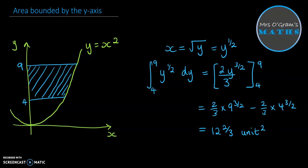We'll say the answer is 12 and 2 thirds units squared, since we're measuring an area. So if you've got a picture of something where you're trying to find an area but it's going up against the y-axis rather than the x-axis, all you do is switch your x's and y's around and go ahead and integrate in just the same way.